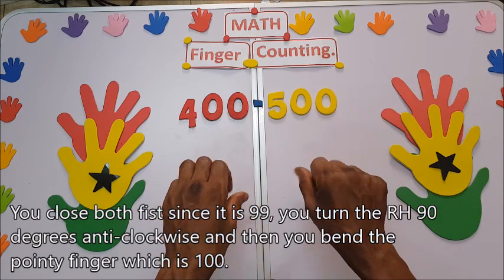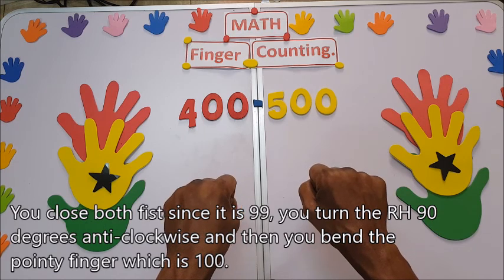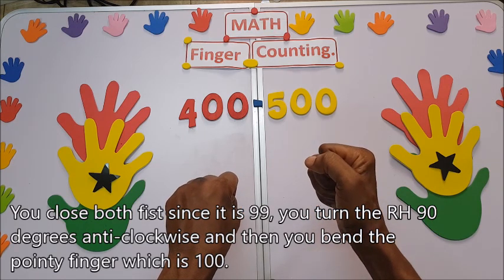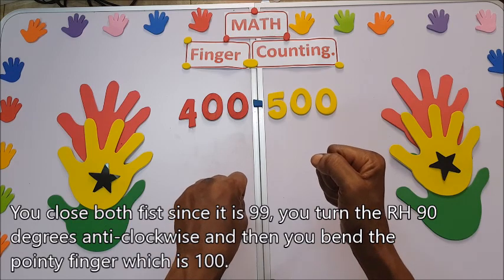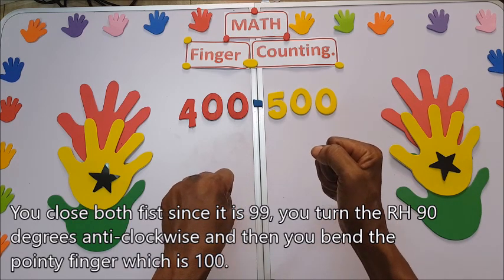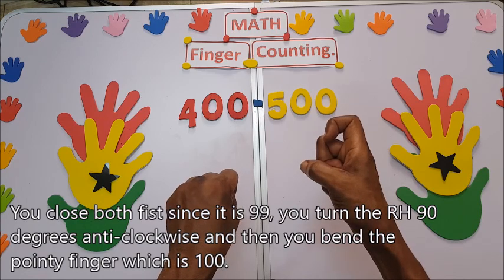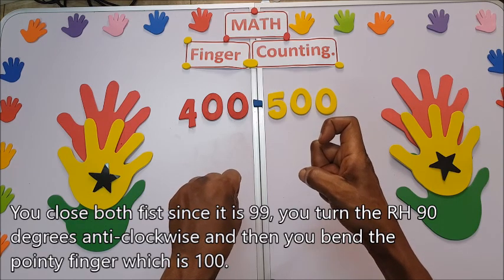You close both fists. Since it's 99, you turn the right hand 90 degrees anti-clockwise, and then you bend the pointy finger, which is 100. So we have 100.